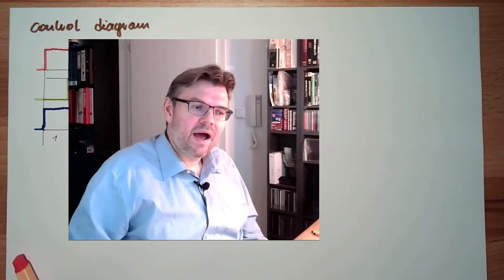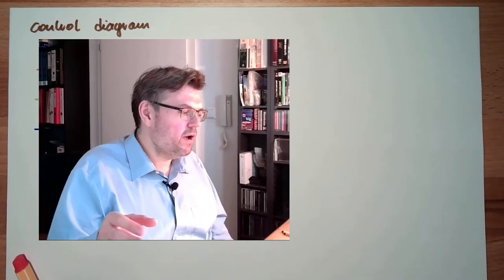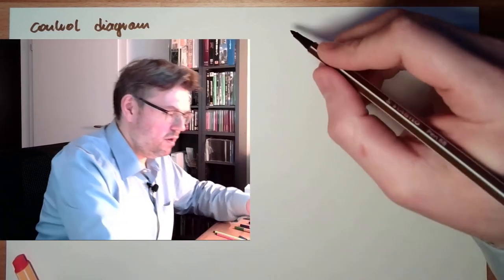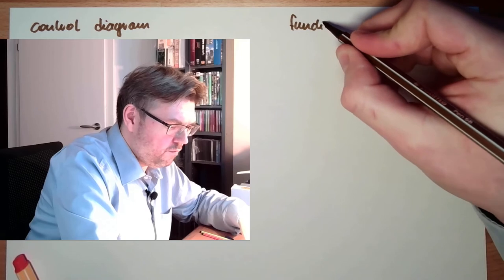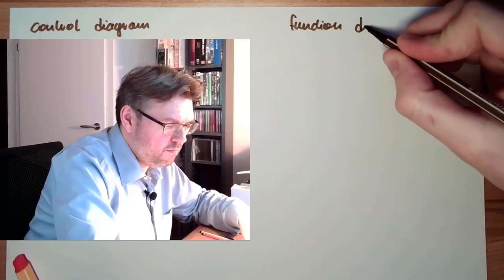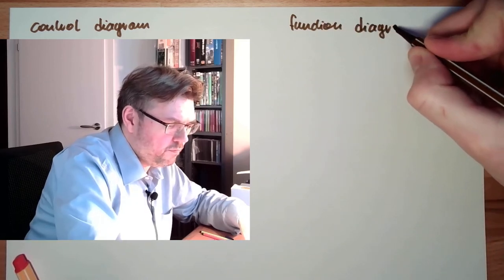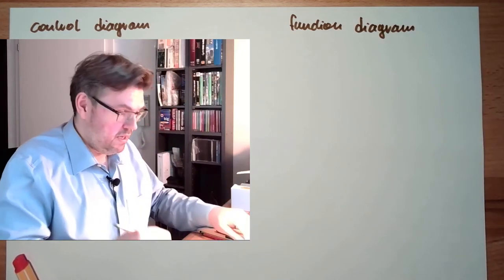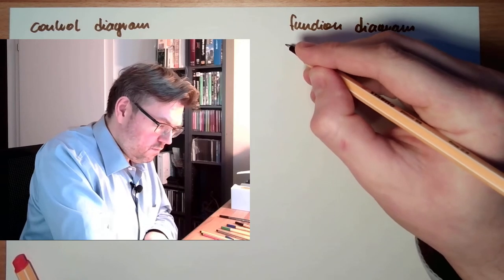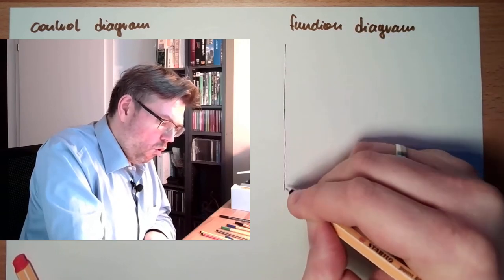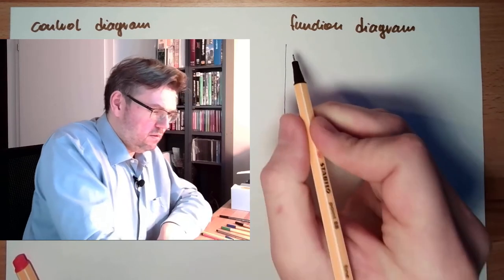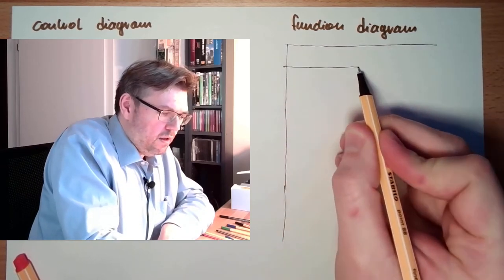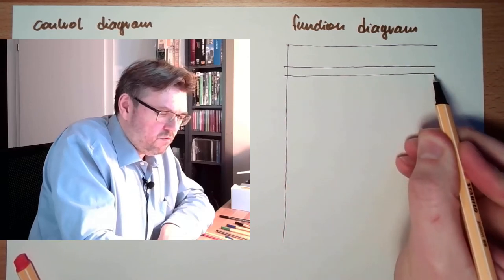And this is why I can combine a travel step diagram and a control diagram to a so-called functional diagram or a function diagram. Function diagram. And here I can really now show what it means. So this time I show all different things. I show the commands as well as the states of the drives.